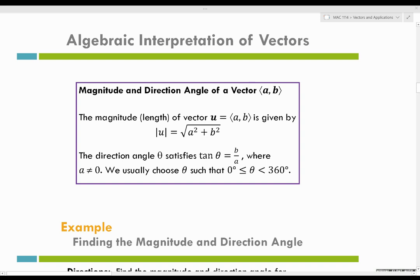Let's look at some algebraic interpretations of vectors. This definition tells us about the magnitude and direction angle of a vector AB. The magnitude, or length, of a vector U is given by the absolute value notation — but be careful: when talking about vectors, those bars mean the square root of the horizontal component squared plus the vertical component squared, not absolute value. Anytime you see those bars, it means magnitude. That's how we calculate magnitude.